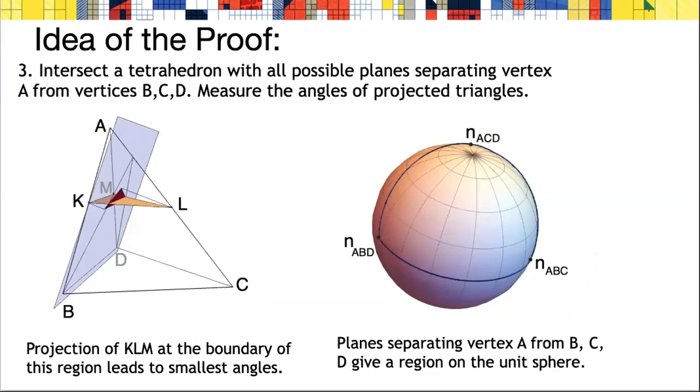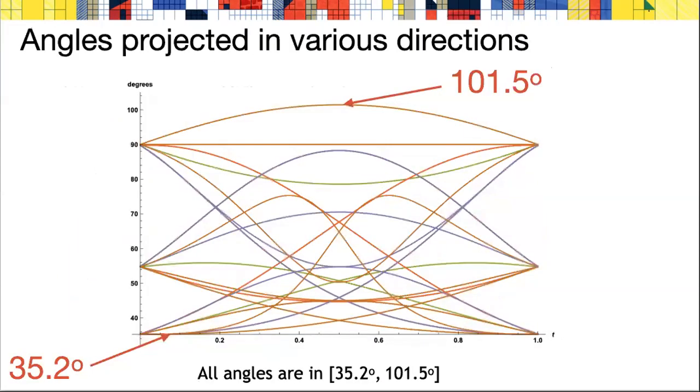We can do some analysis to show that the worst case, the smallest and the largest triangle angles, must occur on the boundary of this spherical triangle. Altogether there are 12 different triangles which have 36 angles. We project them to spherical regions with up to 4 edges each. In total we get 144 angle functions on spherical geodesic arcs.